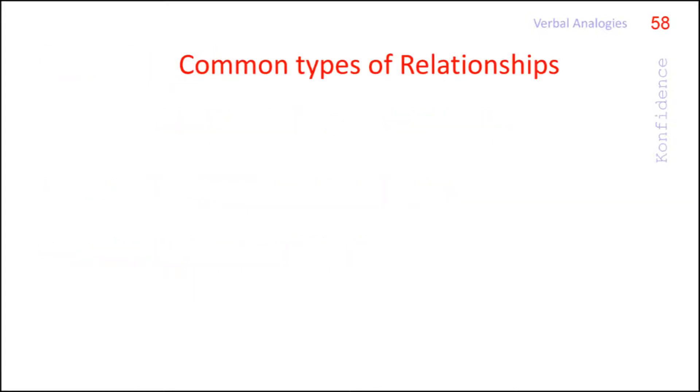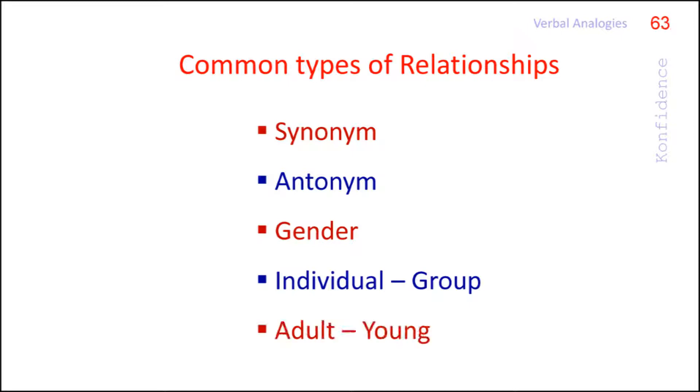To sum up common types of relationship are based on synonym, antonym, gender, individual group and adult young. Among these five more attention should be given to synonyms and antonyms.